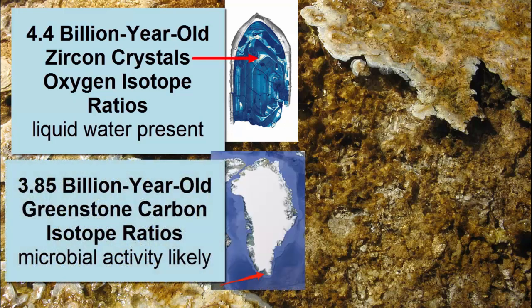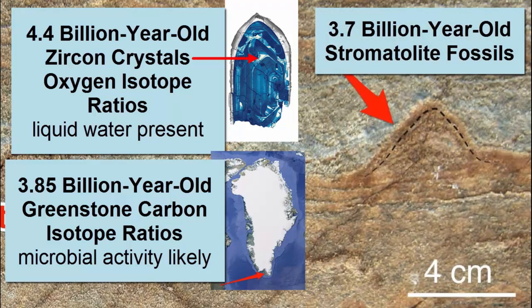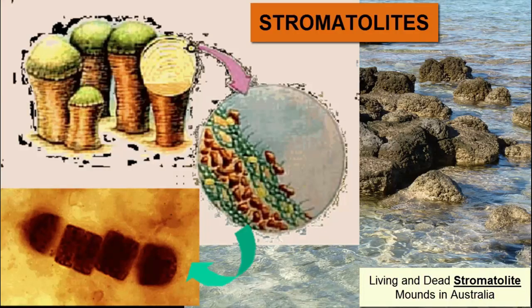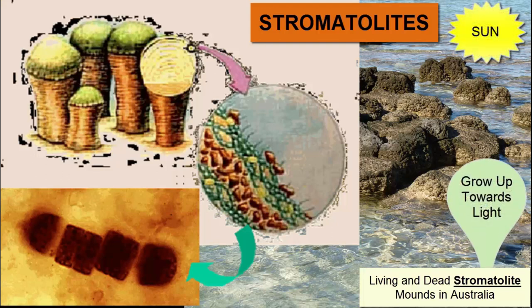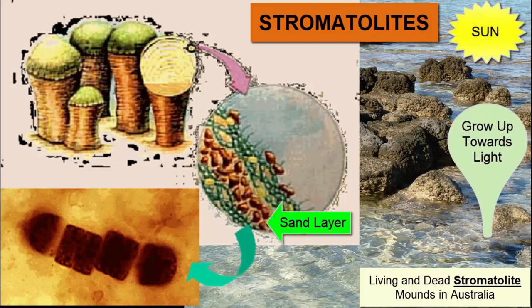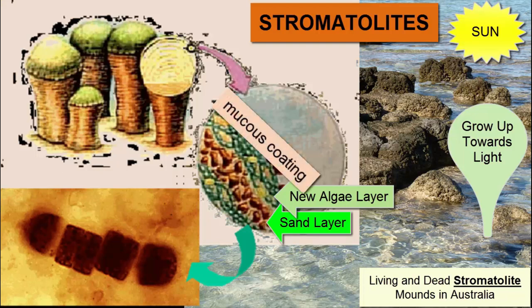A 3.85 billion year old rock from Greenland was found to have carbon isotope ratios suggestive of microbial activity. However, the first fossil evidence we have are stromatolite mounds found in 3.7 billion year old rocks from Greenland. Stromatolite mounds form by successive layers of photosynthesizing cyanobacterial mats growing in a coastal environment and doming upwards towards the light. Each layer traps sand within it, ultimately blocking the light, requiring new layers to form atop the old ones. The cyanobacteria are protected from the ultraviolet rays of the sun by the thick mucus coating in which they live.